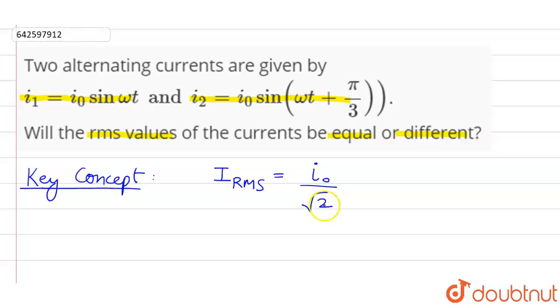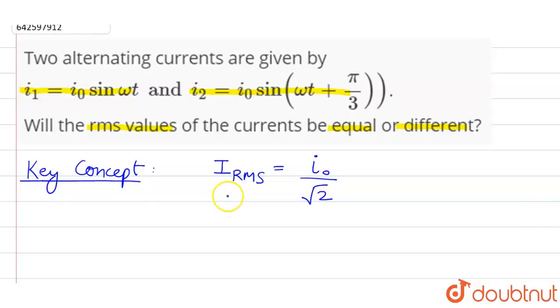In these two currents we can see that they differ only by phase. i₂ is ωt + π/3 and i₁ is sin ωt. So they differ only by phase, but as the formula for RMS is i₀/√2 and their peak values are same, so their currents would be same.